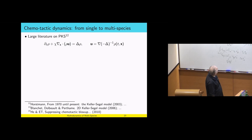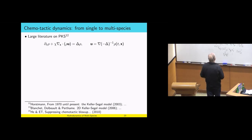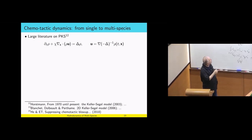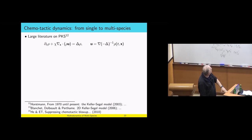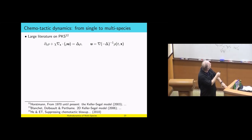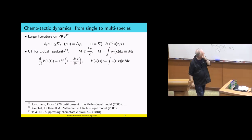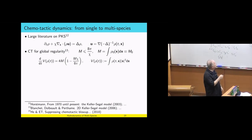Finally, let me mention chemotactic dynamics from a slightly different direction. There is a large literature on chemotactic dynamics. You get a velocity as before, but you also get diffusion. There is a tension between diffusion and transport — the transport given by the Newtonian potential in one species. What is interesting is that there is a global smooth solution and regularity, but only if the mass is not too large. If the mass is too large, the solution breaks down.